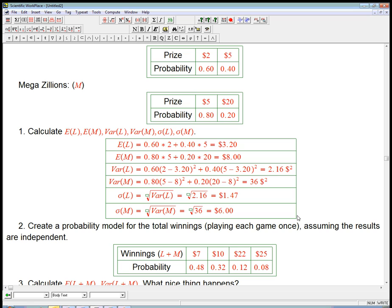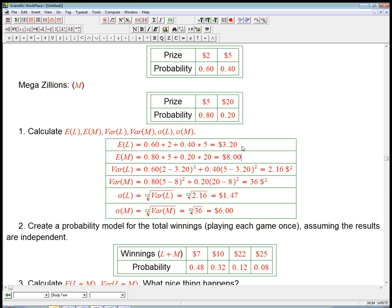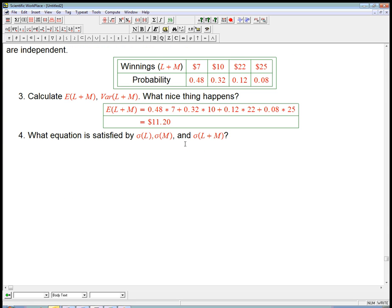That's interesting. That's exactly the sum of these two numbers. And that's pretty, as the book notes, that's something everybody guesses pretty much. If on average I win $3.20 by playing this game, and on average I win $8 by winning this game, how much am I going to expect to win if I play both games? It's the sum. And in fact, let me be a little honest about this.